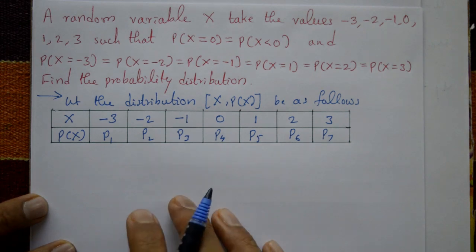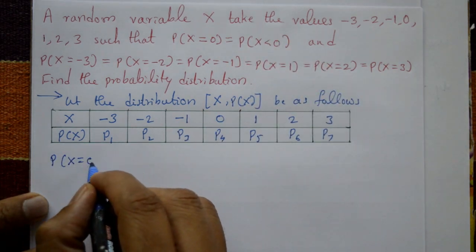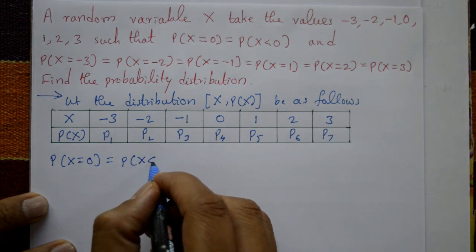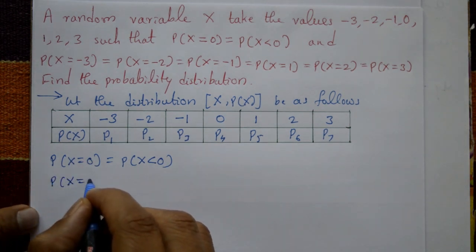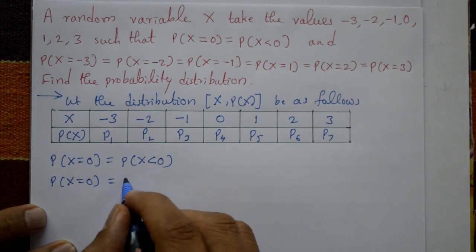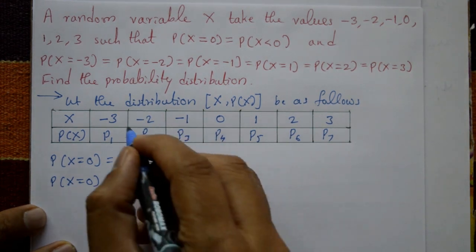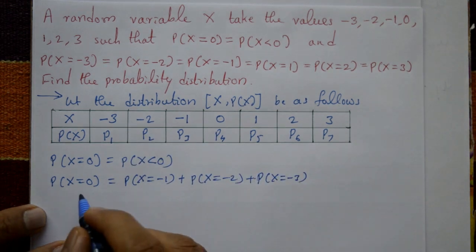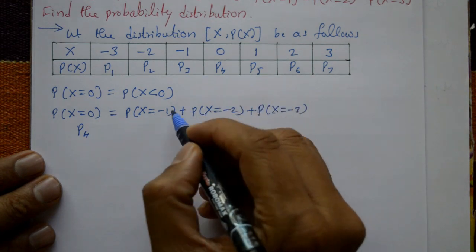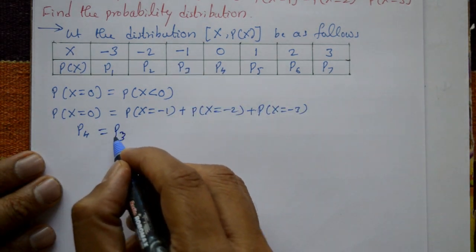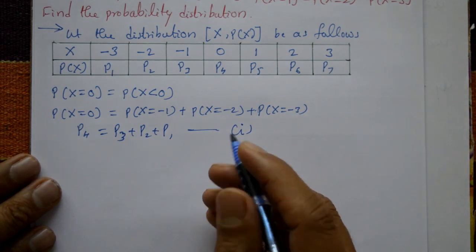The first condition gives us probability of X equal to 0 is equal to probability X less than 0. Now X less than 0 means the values minus 1, minus 2, minus 3. So probability X equals 0, which is p4, equals probability X equals minus 1 plus probability X equals minus 2 plus probability X equals minus 3, that is p4 equals p3 plus p2 plus p1. This is equation number 1.